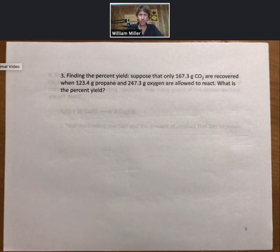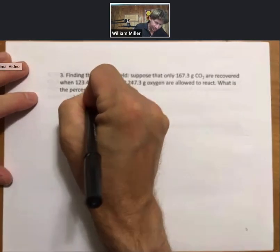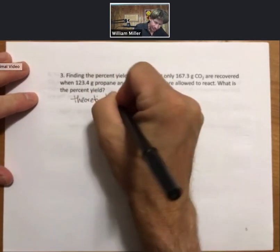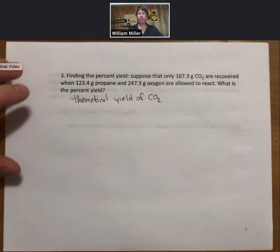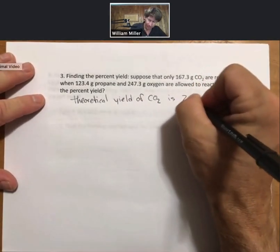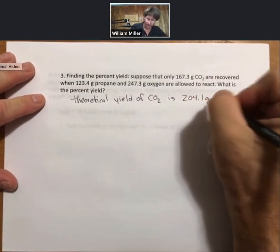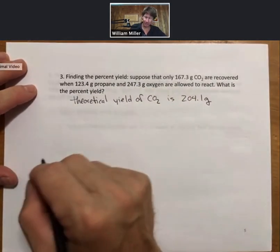In this case, 167.3 grams of carbon dioxide are recovered from the same type of information from the previous problem where we found that the theoretical yield of carbon dioxide is 204.1 grams based on these same numbers that we had before, the 123.4 grams of propane and the 247.3 grams of oxygen.